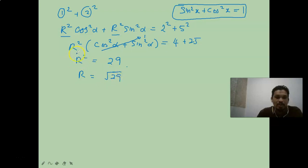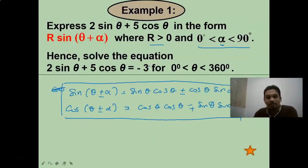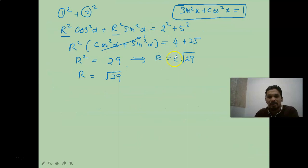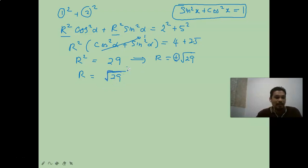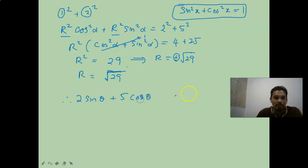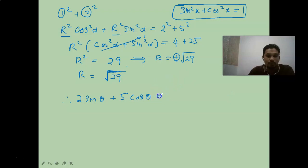According to this calculation, R could be ±√29. But referring to the question, R must be positive, so we take only the positive value: R = √29. Therefore, 2sinθ + 5cosθ = √29·sin(θ + 68.2°).